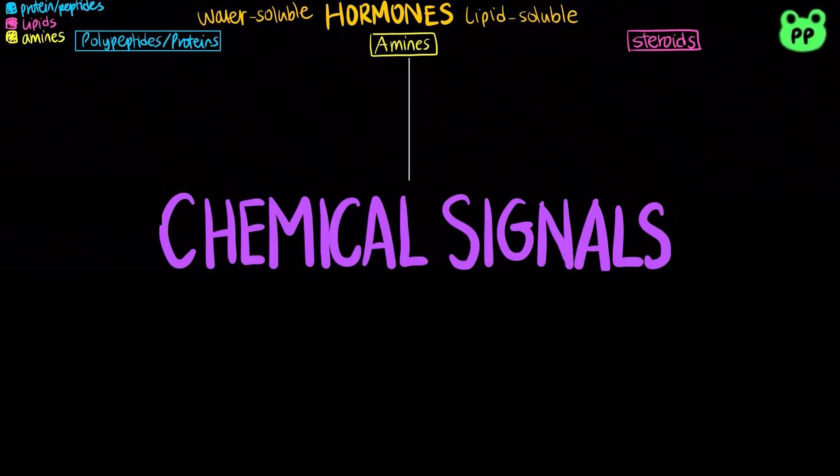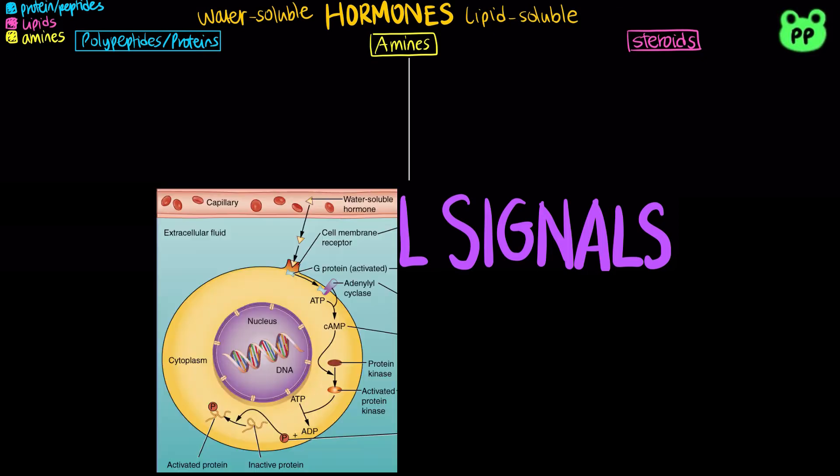There are five main types of secreted chemical signals in our body. Hormones are chemical signals that are secreted into the circulatory system and communicate regulatory messages within the body. Hormones reach all parts of the body, but only target cells are equipped to respond.